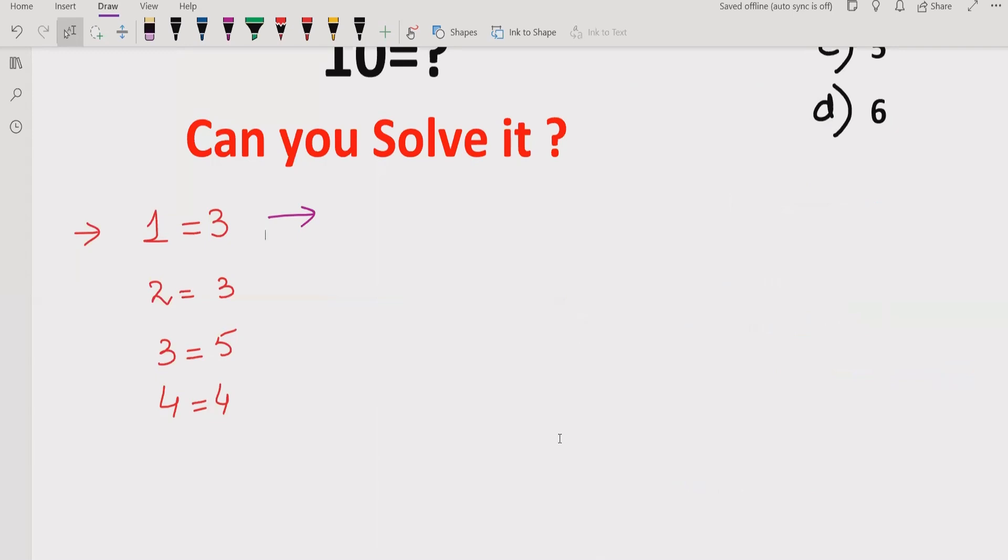Just like here, 1 is written as O-N-E in English. If we count, that's 1, 2, 3 letters, so this number is 3.